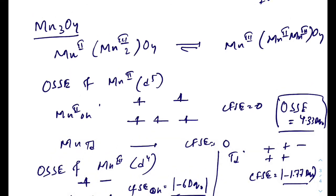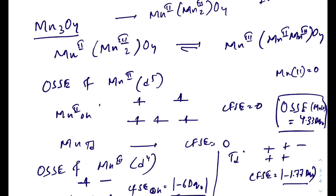Since OSSE of Mn³⁺ (≈4.33DQ₀) is greater than OSSE of Mn²⁺ (0), Mn³⁺ is more prone toward the octahedral hole. Therefore Mn₃O₄ is a normal spinel with Mn²⁺ in the tetrahedral hole and Mn³⁺ in the octahedral holes. To understand the D orbital splitting in octahedral and tetrahedral geometry, please visit my previous lectures on coordination chemistry.